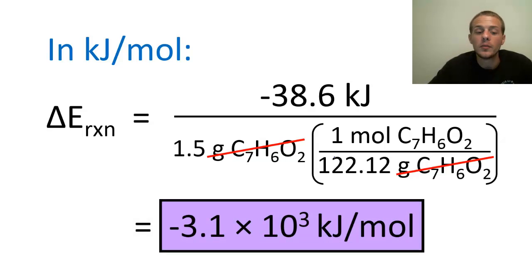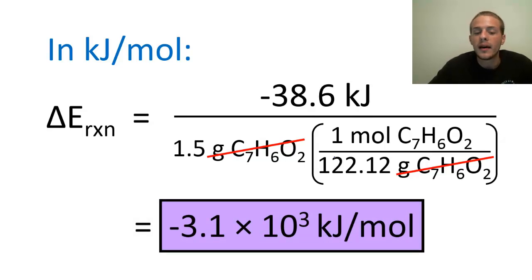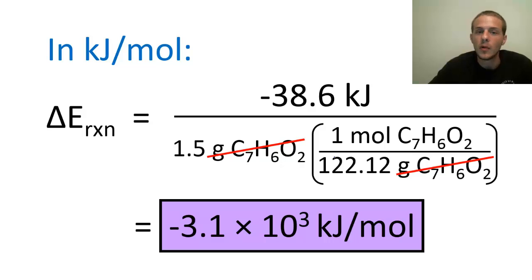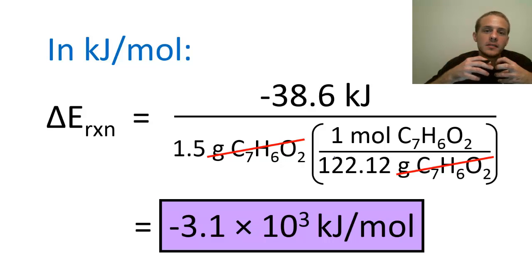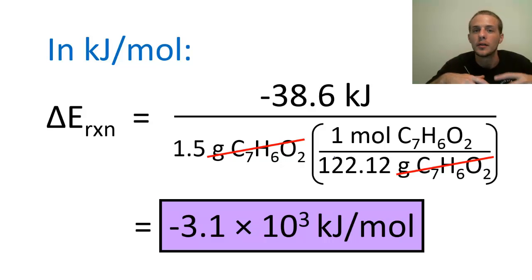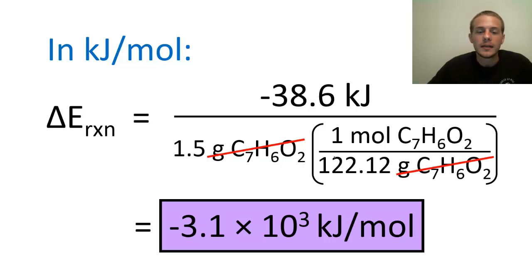The result is minus 3.1 times 10 to the 3 kilojoules per mole. So for every mole of benzoic acid that undergoes combustion in that bomb calorimeter, over 3,000 kilojoules are released — a lot of energy packed into the system, ready to burst out with just one spark of ignition, assuming more than enough oxygen is present. I hope this video helped you out.